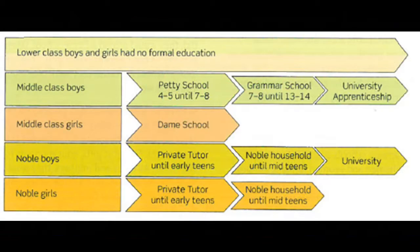So you might be thinking: why are you showing us that? What's that got to do with Elizabethan education? Well, it's to draw a very clear contrast. The stated aim of every government for the last 20 or 30 years has been to close the gap between people from disadvantaged and more advantaged backgrounds and try to make society a place where everybody can get high quality education regardless of their background. It was the complete opposite in Elizabethan England. If you were a noble girl or noble boy — somebody who was rich, maybe with connections to the royal court — you would get a private tutor.